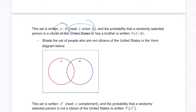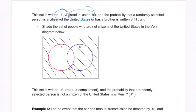The next one says shade the set of people who are not citizens of the U.S. in the Venn diagram below. Well, that's everything not in A—all the people who are not citizens. This is written as A complement, and the probability that a randomly selected person is not a citizen of the United States. They're using the complement symbol. I have seen the dash as well. Any symbol works for me as long as you know what's happening.